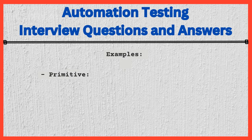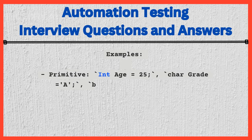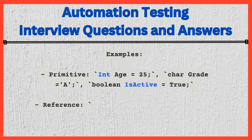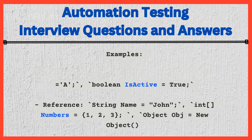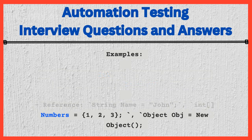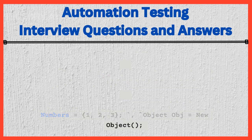Examples — Primitive: int age = 25, char grade = 'a', boolean isActive = true. Reference: String name = "John", int[] numbers = {1, 2, 3}, Object obj = new Object().